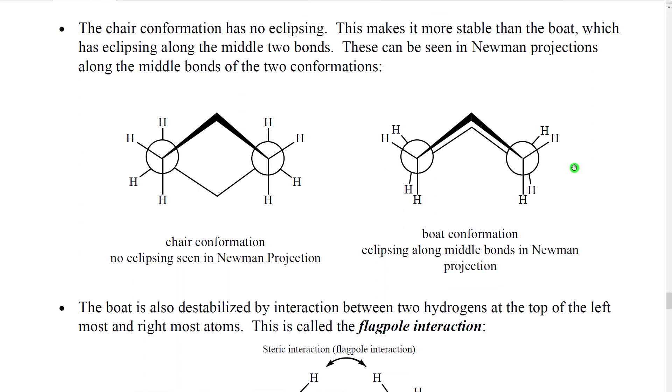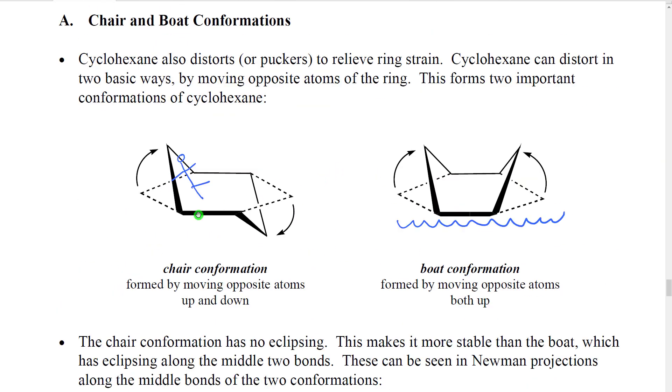If we then go look at eclipsing in the chair and the boat, we can look again using a Newman projection type of view. Again, this is much easier to see if you build models. What we have is one bond on one side and one bond on the other. So that would, for example, be like this bond and that bond.